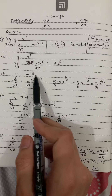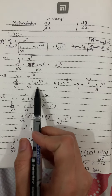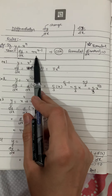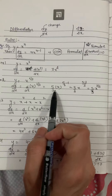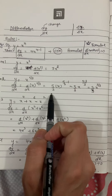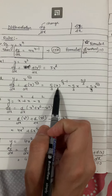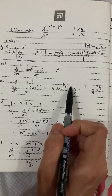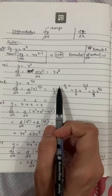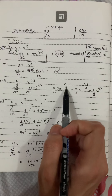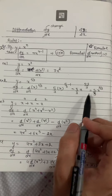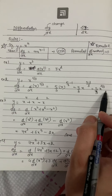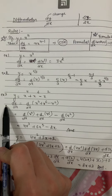Similarly, one more example: y equals x raised to power 5/3. Using the same formula, the power comes to the front giving 5/3, then x to the power n minus 1, so 5/3 minus 1, which gives x raised to power 2/3. The final answer is 5/3 x raised to power 2/3.